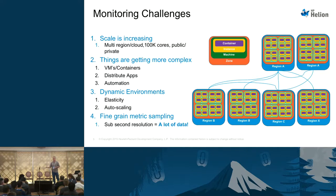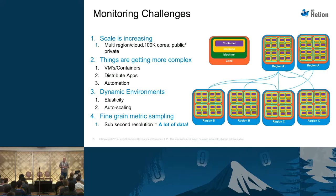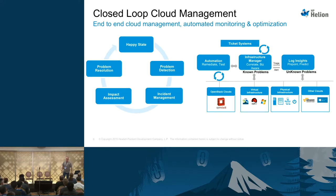That puts a lot of load on the monitoring system to figure out what's really going on. What's an error? What's actually intended to happen? Did we scale up or down because we had to, or because there was a problem? All of that needs a lot of data — you need to react quickly, you need fine-grained sampling, and you need to do that over a large number of things you're monitoring. Those are the big challenges that drove a lot of what we're looking at in designing Monasca.